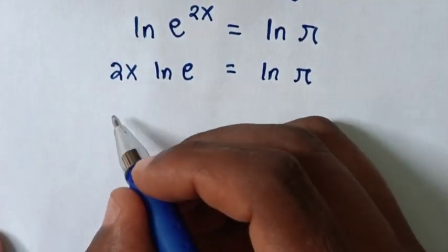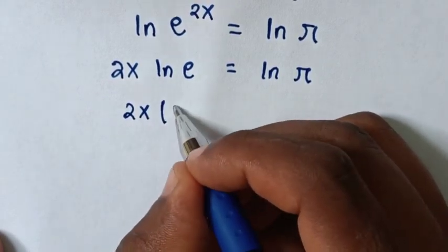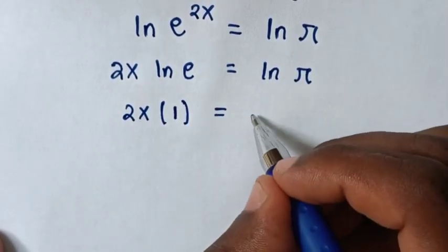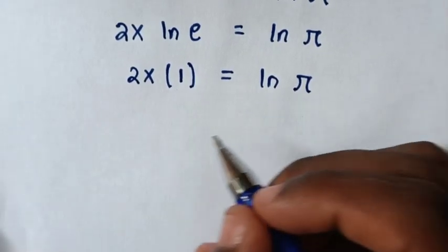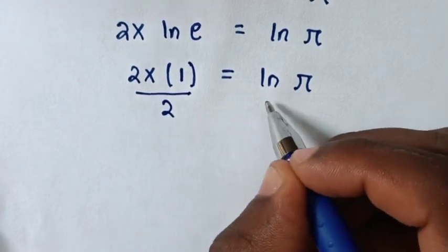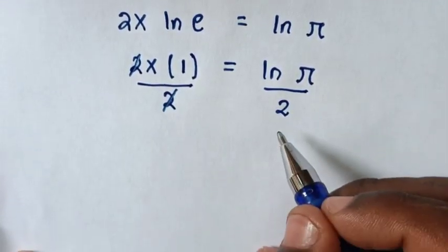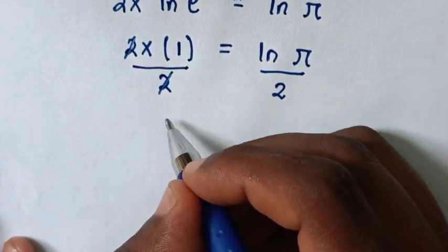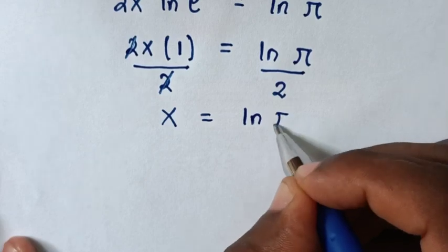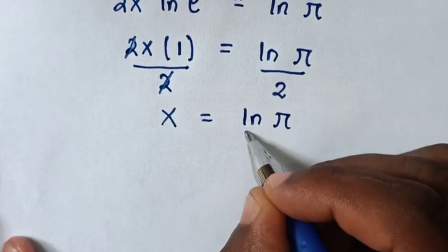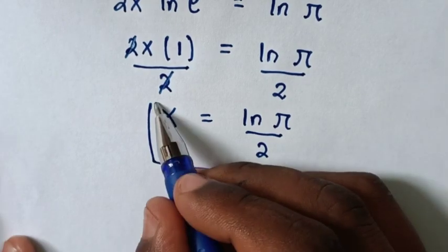Then in the next step, here it will be 2x, and ln(e) is the same as 1, so it will be 2x times 1 is equal to ln(pi). Then in the next step, we will divide by 2 on both sides, so the 2s will cancel. Then x times 1, which is x, is equal to ln(pi) over 2. So this is the final answer for the value of x.